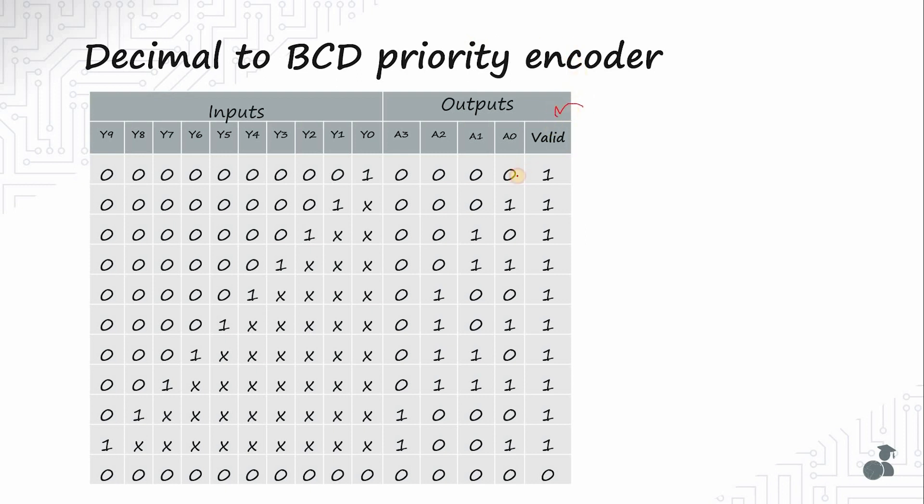The priority encoder also has an additional valid bit. This valid bit is set to 1 if at least one of the inputs is 1. If all inputs are 0, the valid bit is set to 0. So now you can see that both the problems that we encountered in the previous slide are solved by the priority encoder.